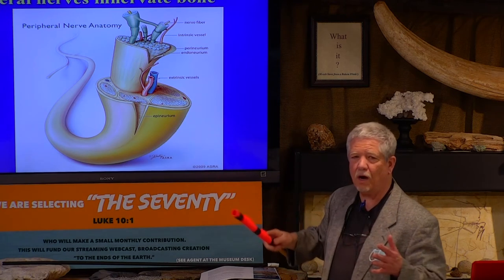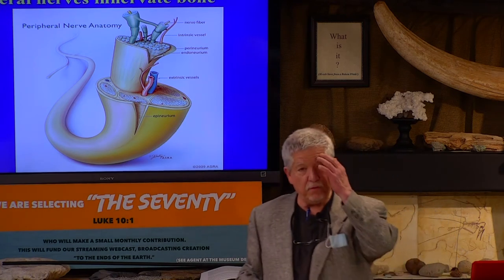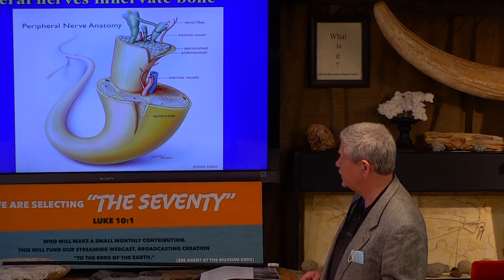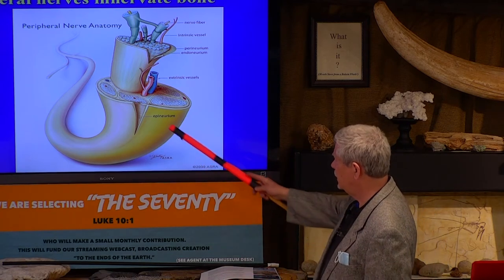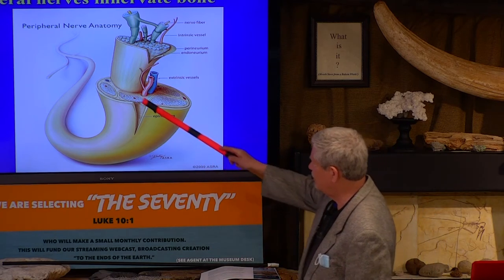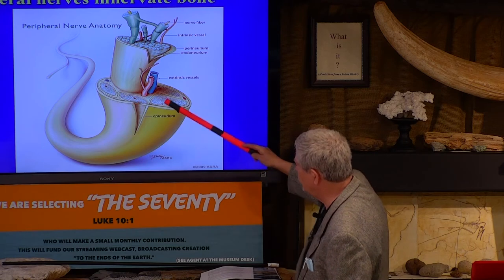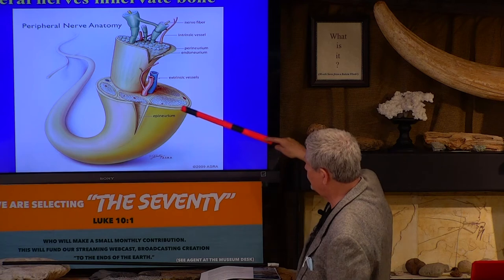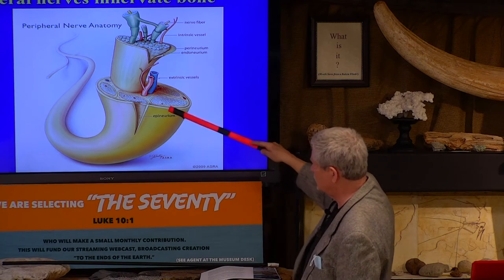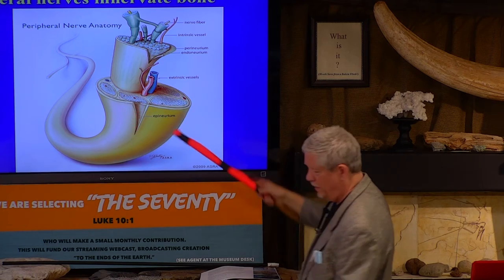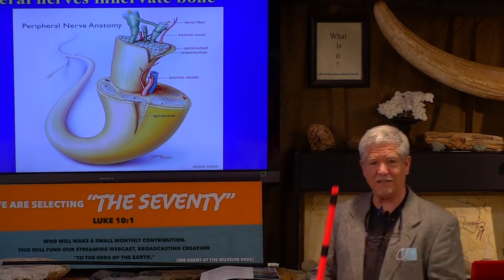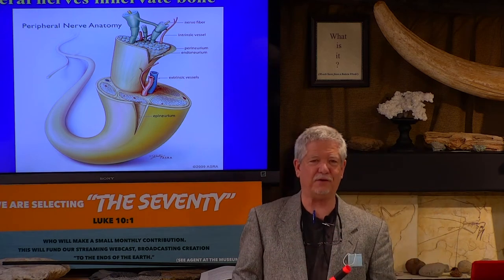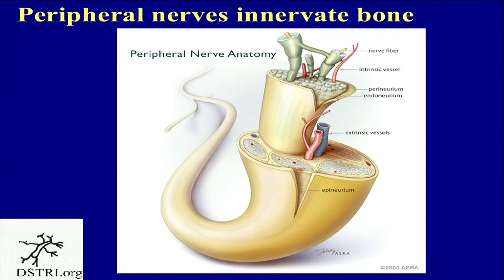The terms are really confusing and they haven't really settled well in the literature on the terminology. But you have bundles inside the nerve — bundles of fibers called fascicles. So a nerve is a grouping of fascicles that are full of these tiny little electrical fibers surrounded in fat.